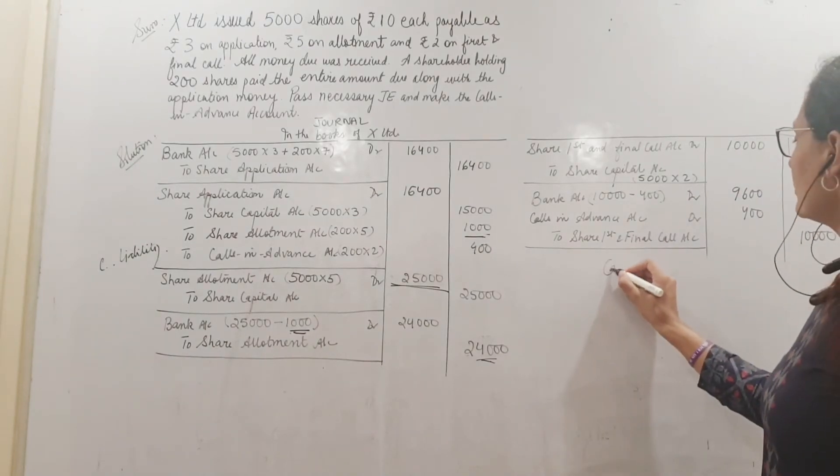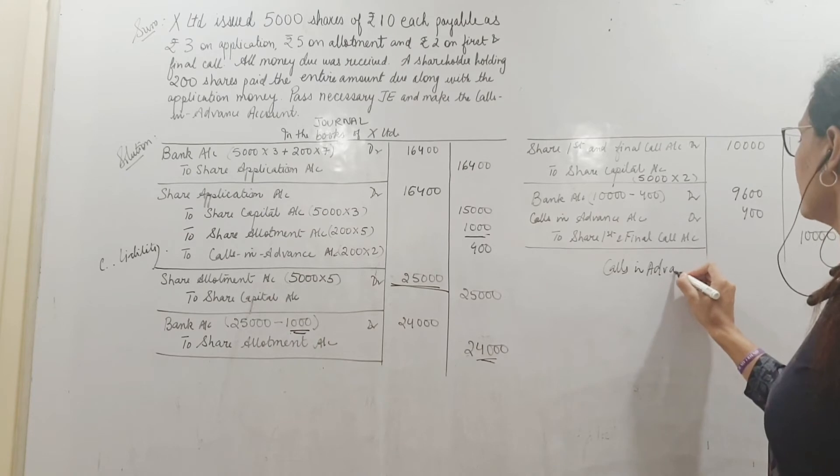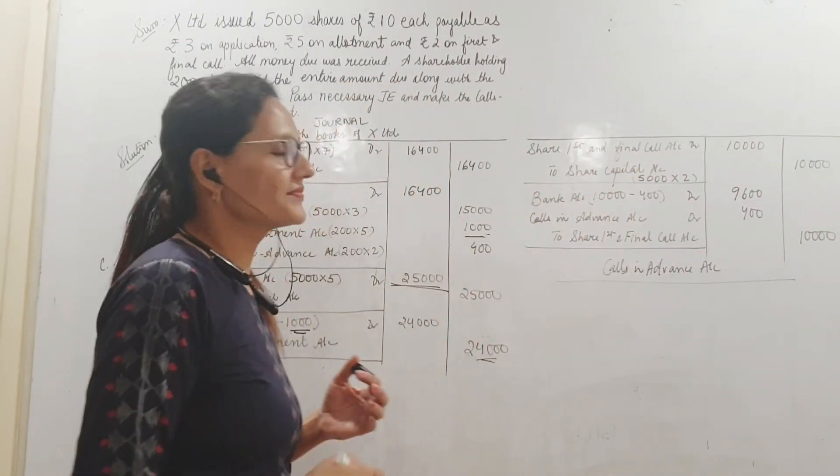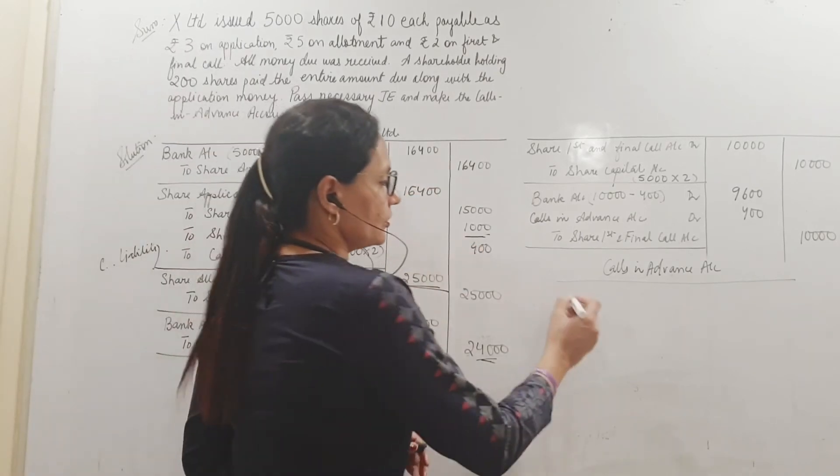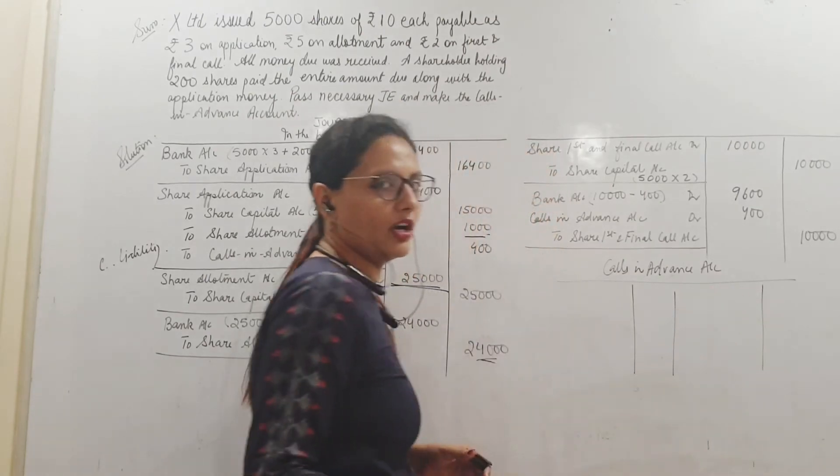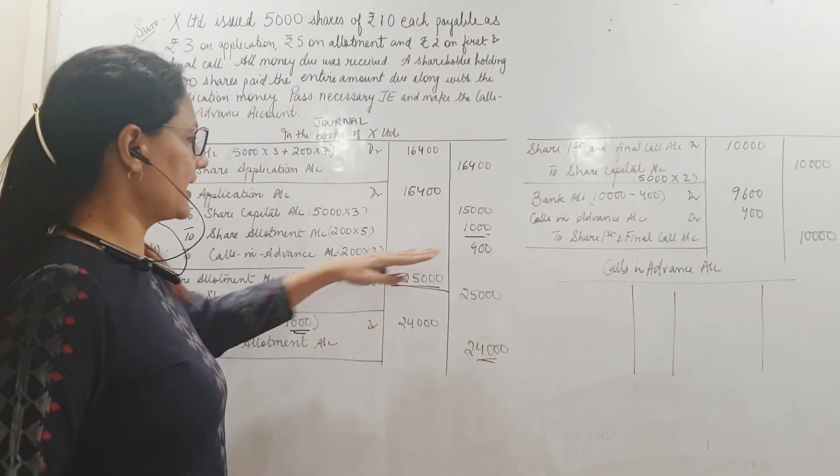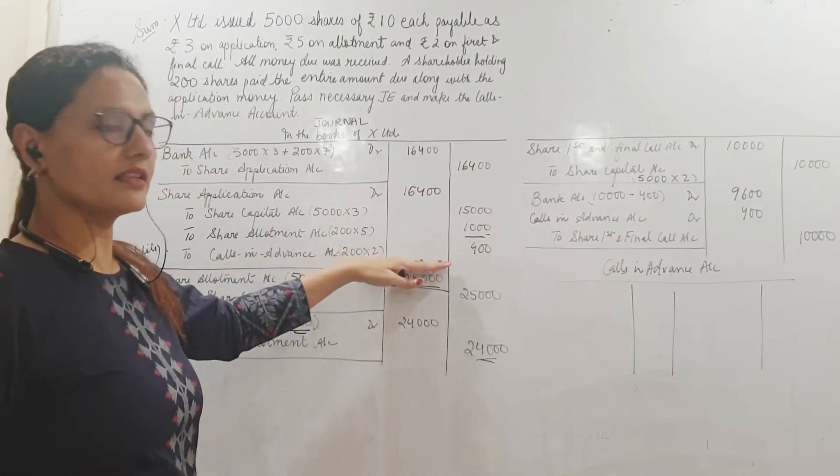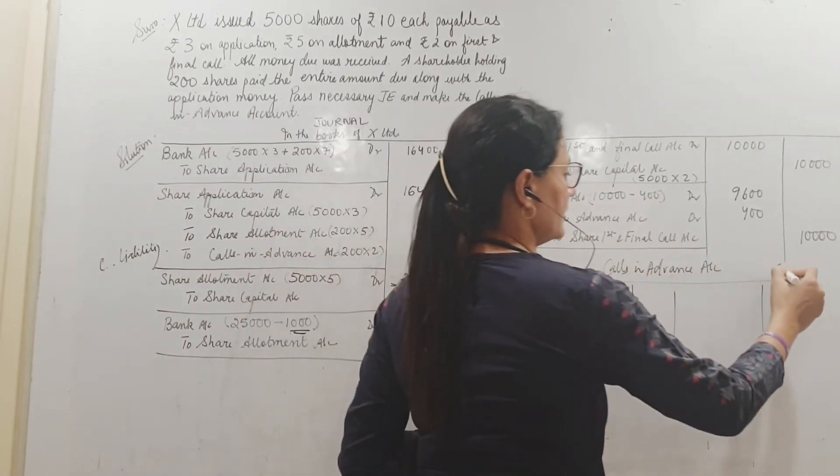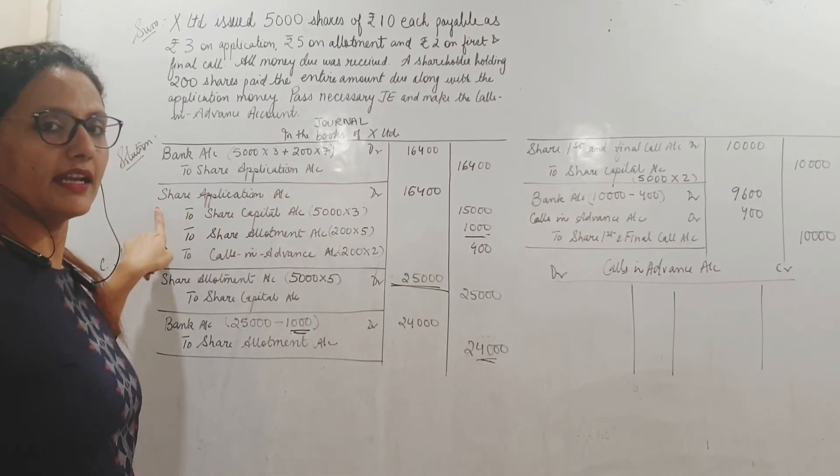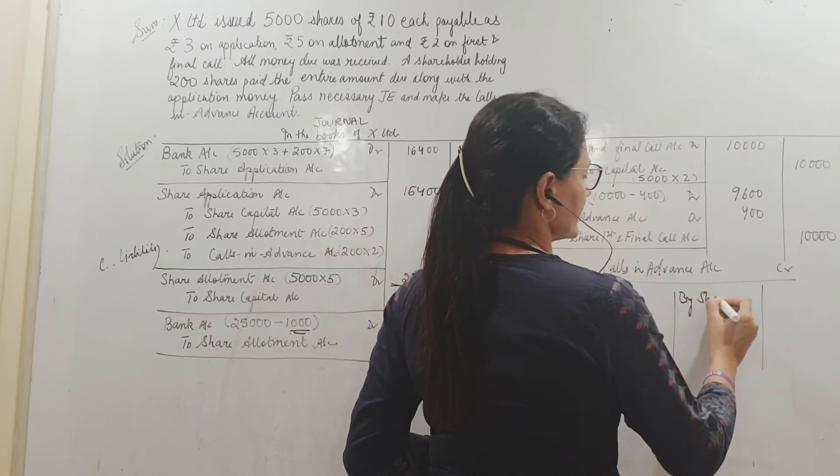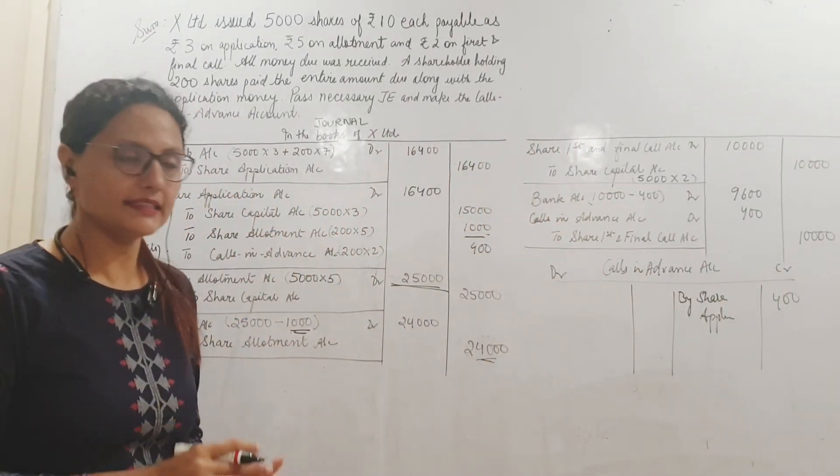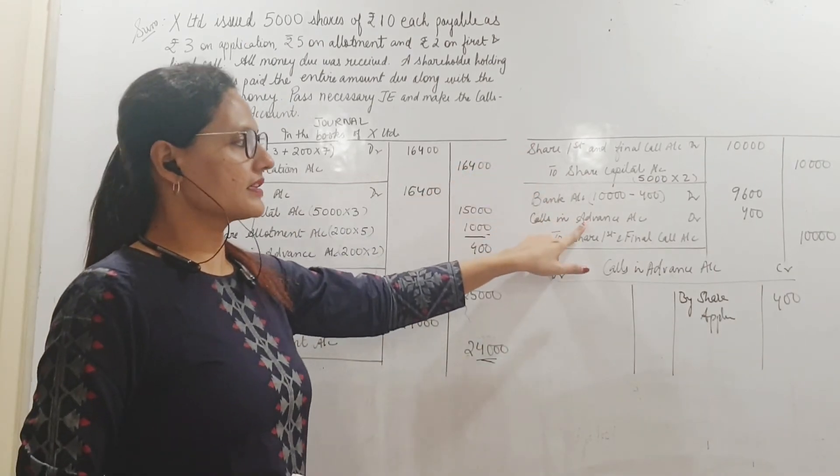So this is how we go about the journal entry. You have also been asked to prepare calls in advance account. Now sometimes you're asked to prepare certain ledger accounts and maybe not all. So let us see how from the journal itself we make a small ledger account. Calls in advance, when does it come first time here? Here. This is calls in advance account credit. We are crediting calls in advance account. So it will be on the credit side. This is the debit side, this is the credit side. What account am I correspondingly debiting? Share application. So here debit by share application and 400.